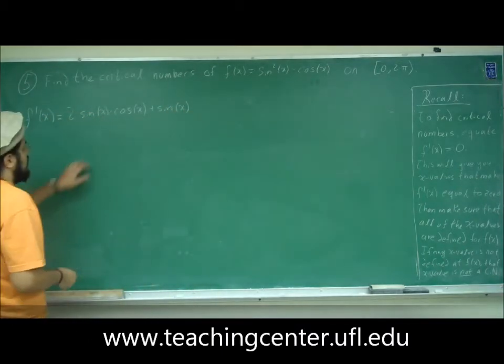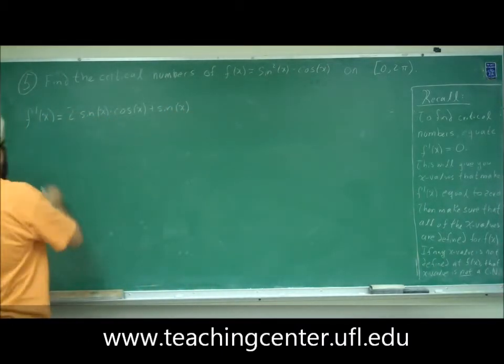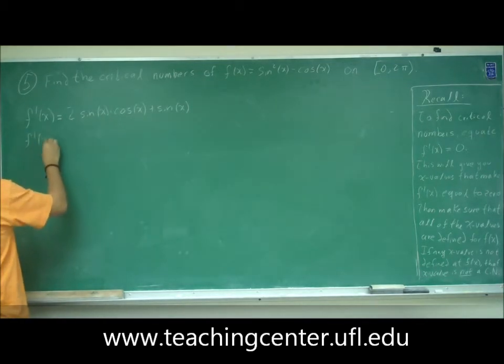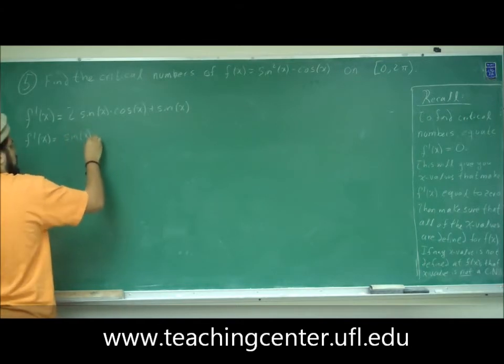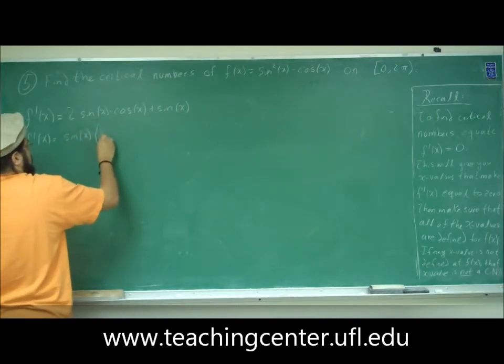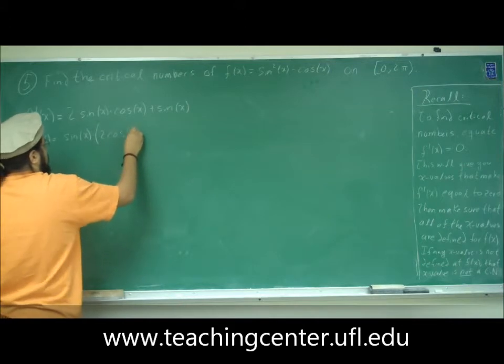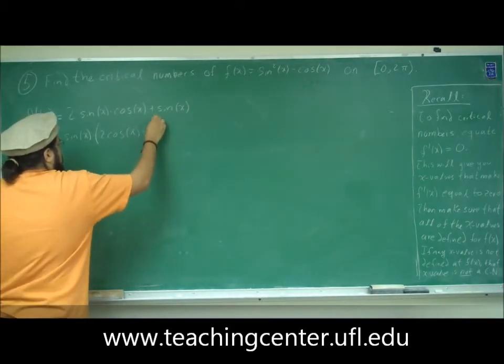All right, let's go ahead, we can factor out the sine. So f prime of x is equal to sine x times two cosine x plus one.